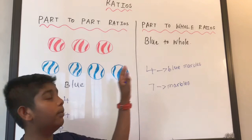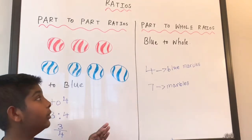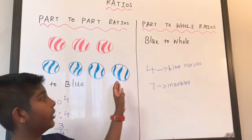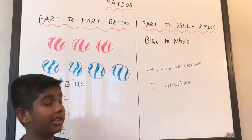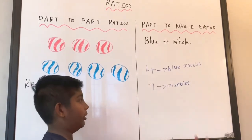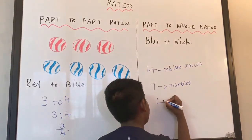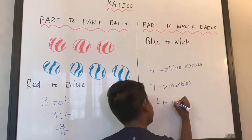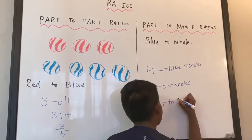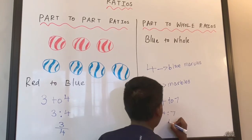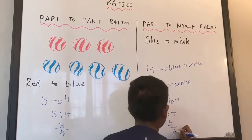We're asking blue to whole - blue marbles to whole. That means we have to write down our blue marbles first, and then the total marbles. So we're going to write as four to seven, or 4:7, or four over seven.